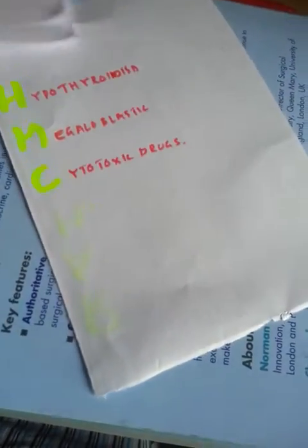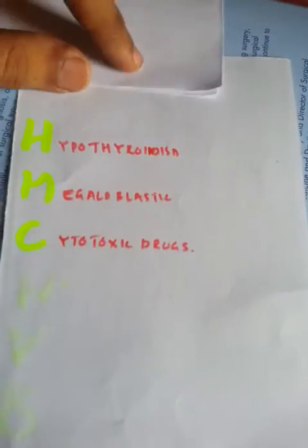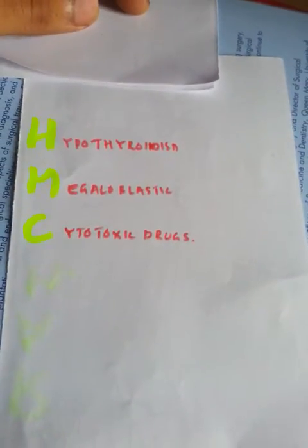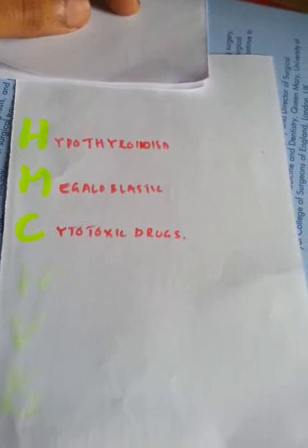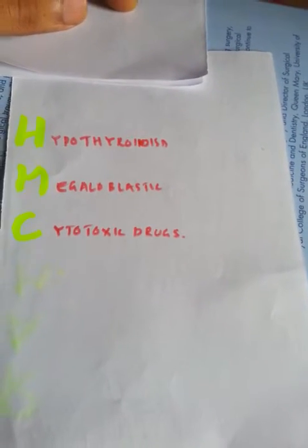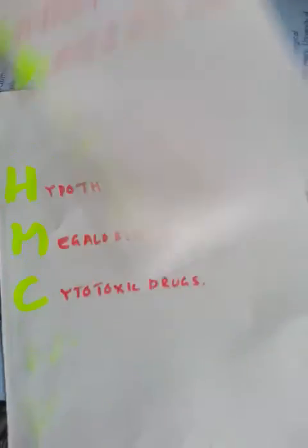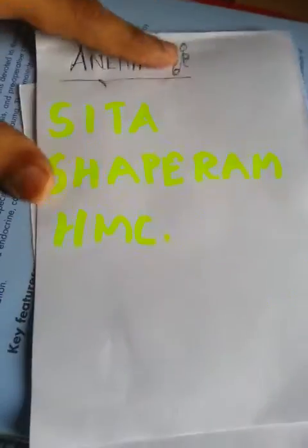For macrocytic anemia, the mnemonic is HMC. H is for Hypothyroidism, M is for Myelofibrosis anemia, C is for anemia due to Cytotoxic drugs. That's the end of the tutorial on various types of anemia.